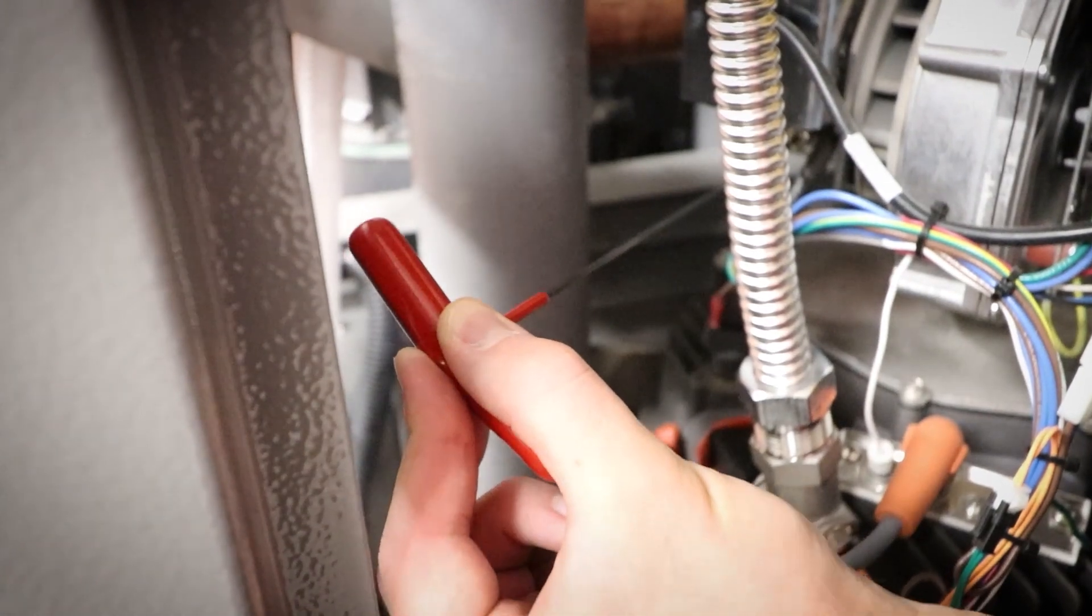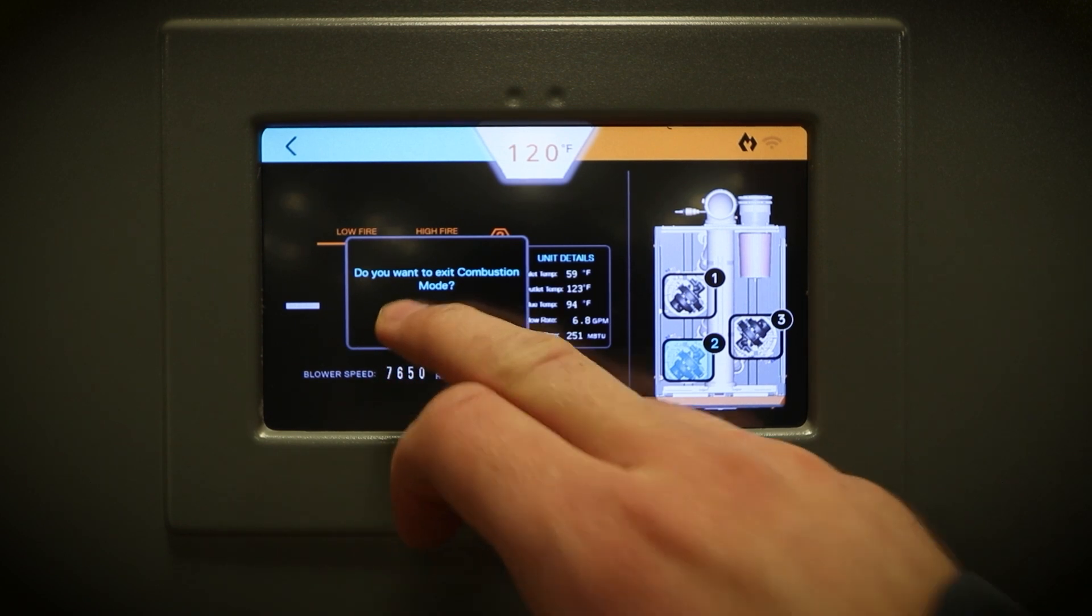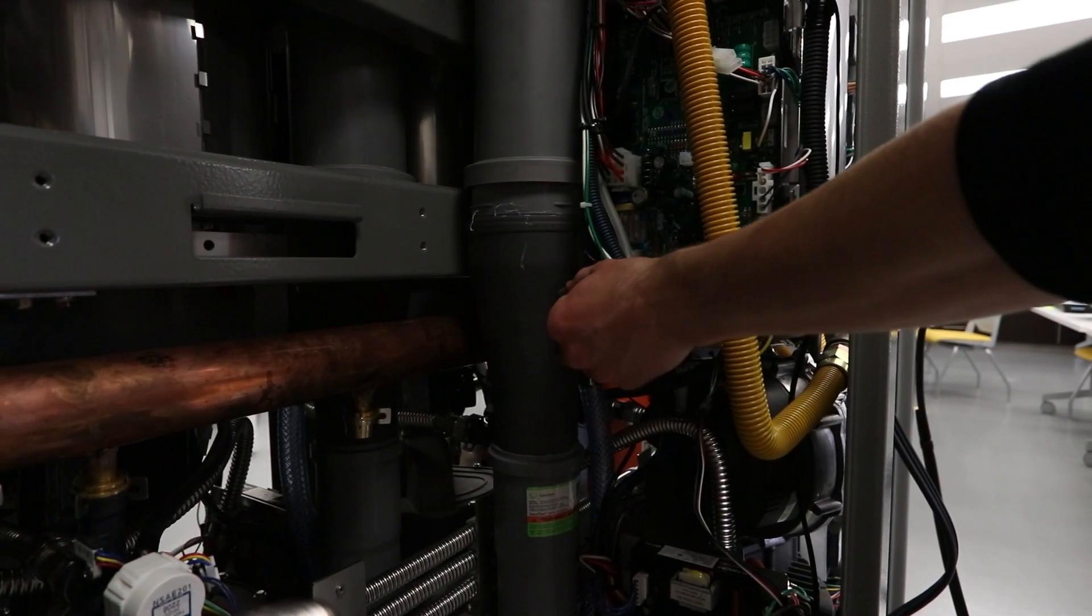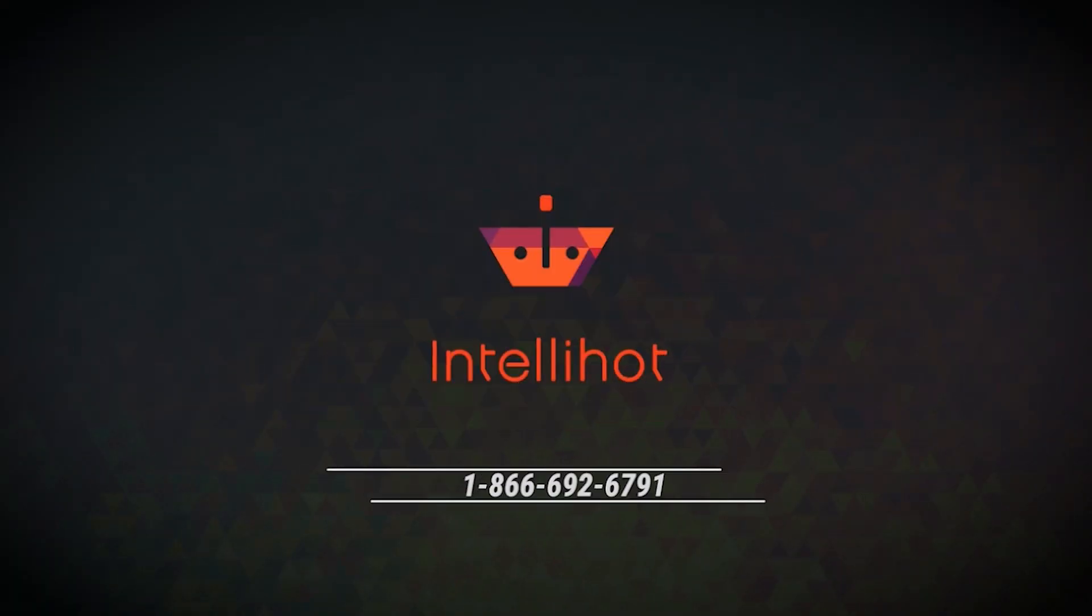Once the adjustments have been made, you can exit combustion mode and turn down the flow to the unit. Ensure that the air switch port is reconnected. If you have any questions, please contact product support.